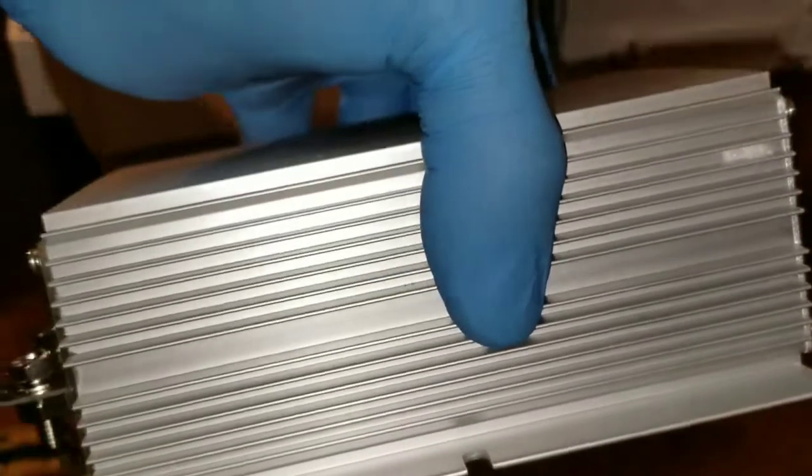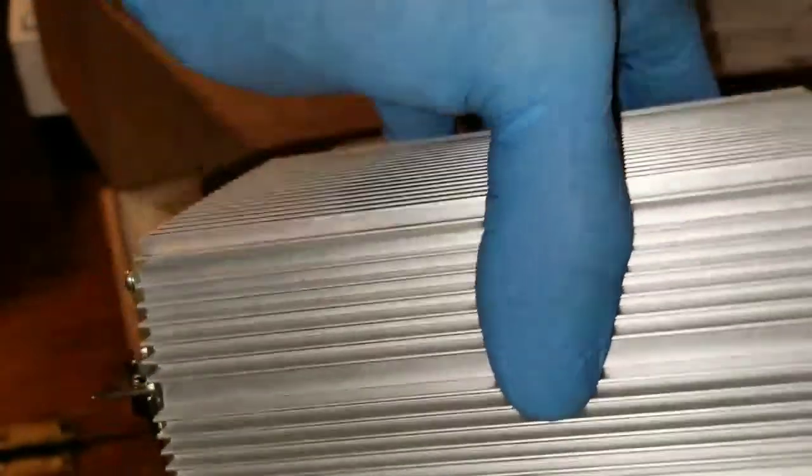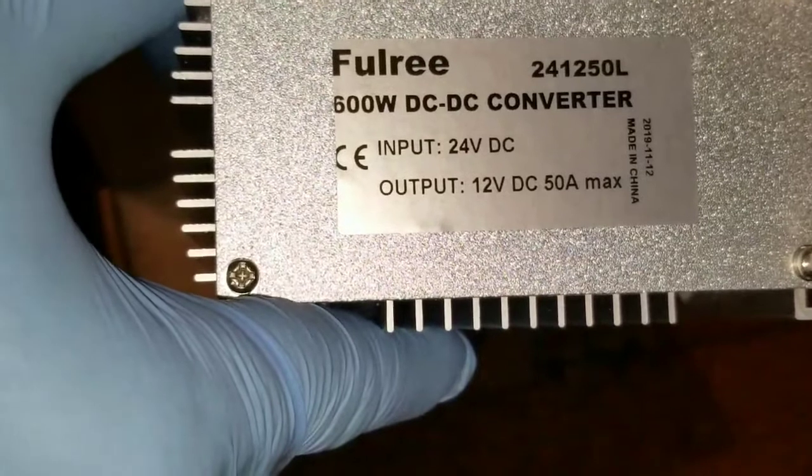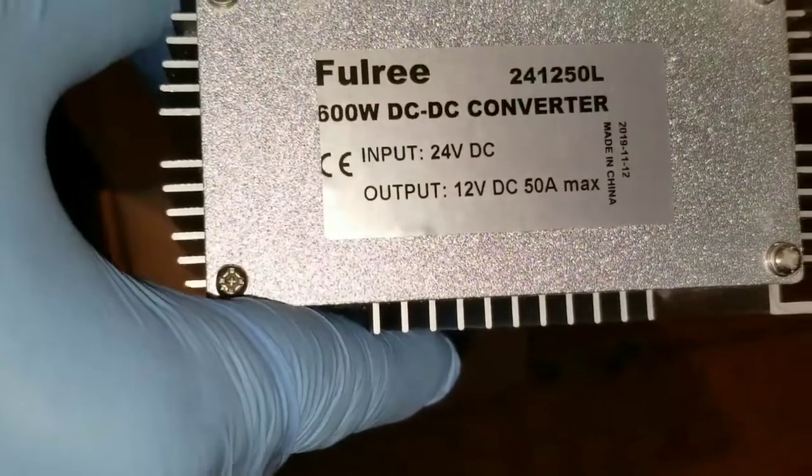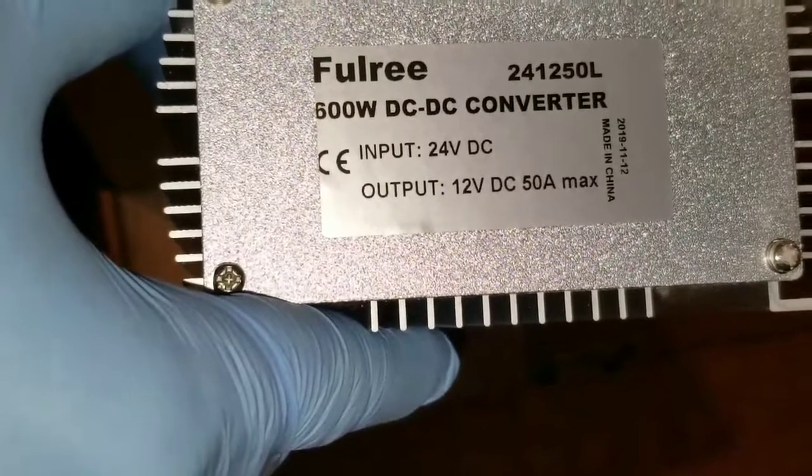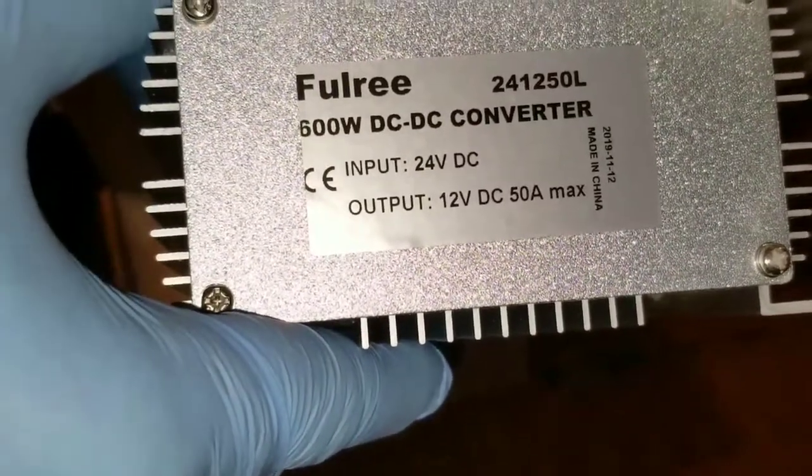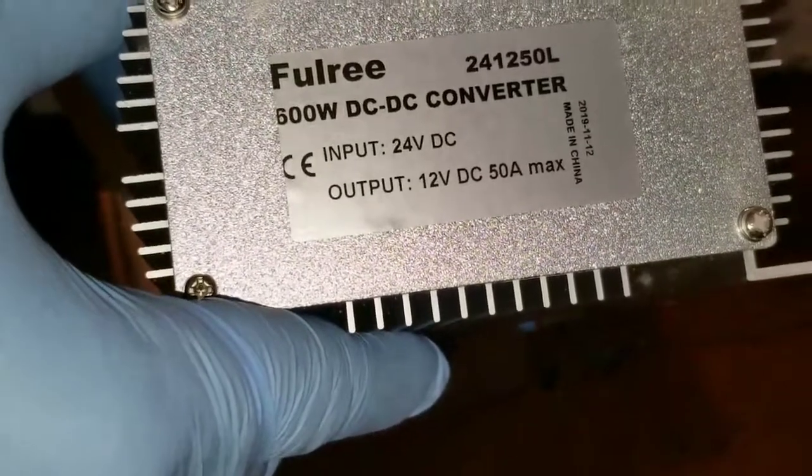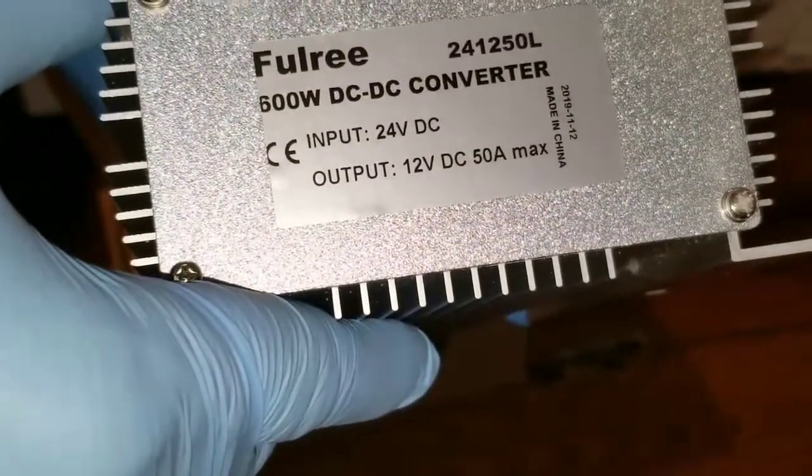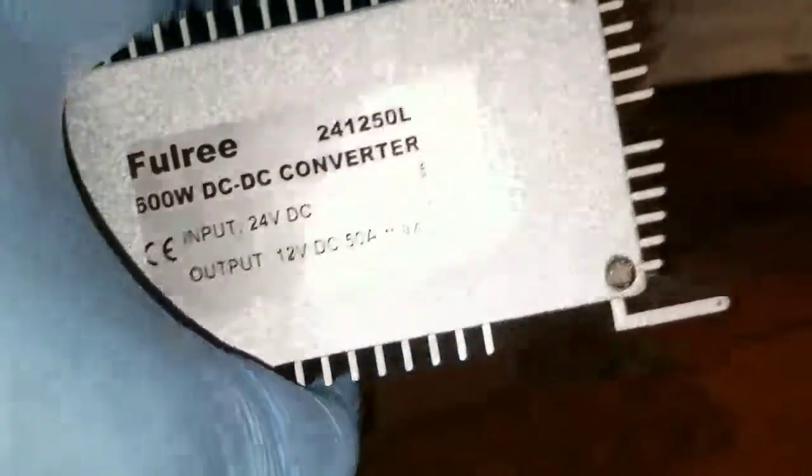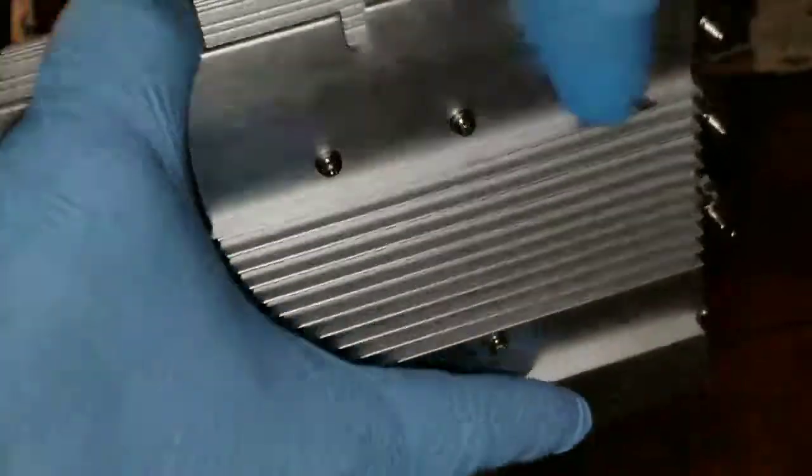Look at the die-cast aluminum, which is very robust. There you go, 600 watt DC to DC converter, Flulre or something like that. The output is 12 volts DC, 50 amp max. This thing is kind of heavy, approximately two to five pounds.